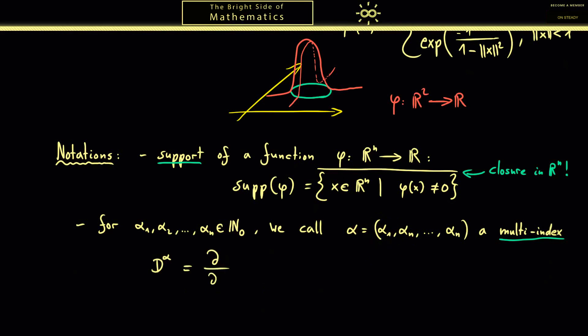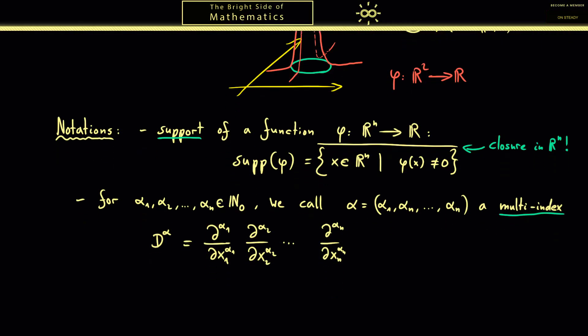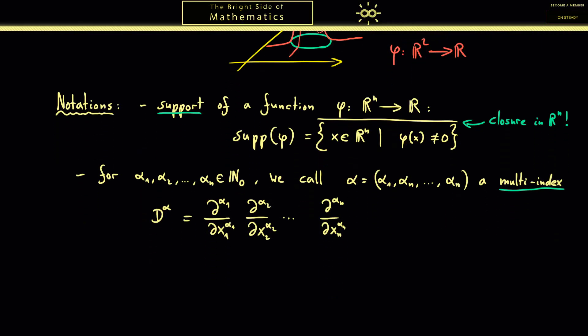For example α_1 tells us that we have to form the derivative with respect to x_1 α_1 times. So I would write partial derivative with respect to x_1 and α_1 times. The same goes for the second variable x_2 and there we have α_2. And in the end we reach x_n α_n times. Now if this is the first time you have seen that then of course a quick example would be helpful.